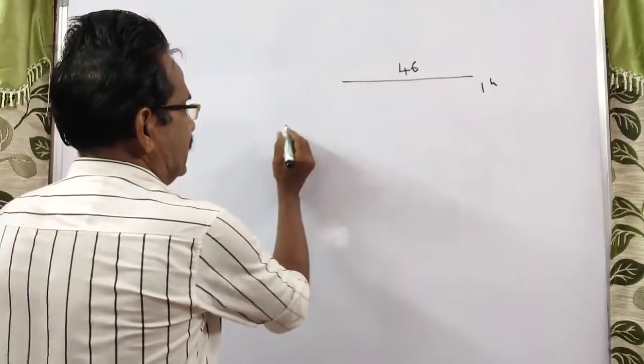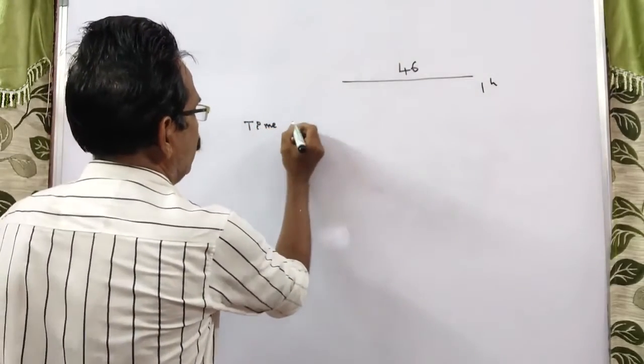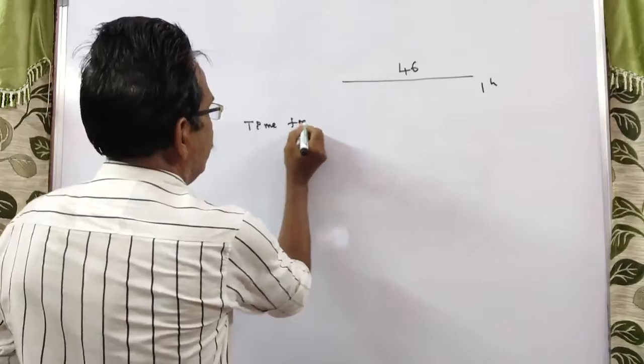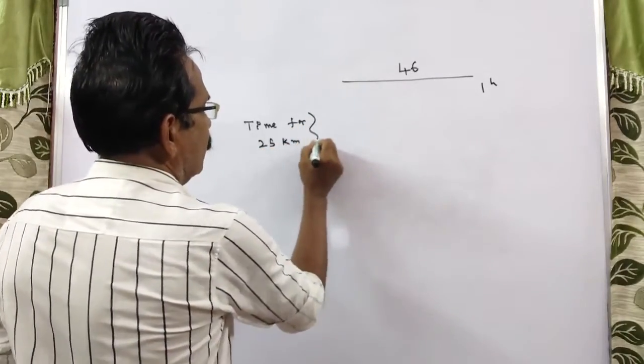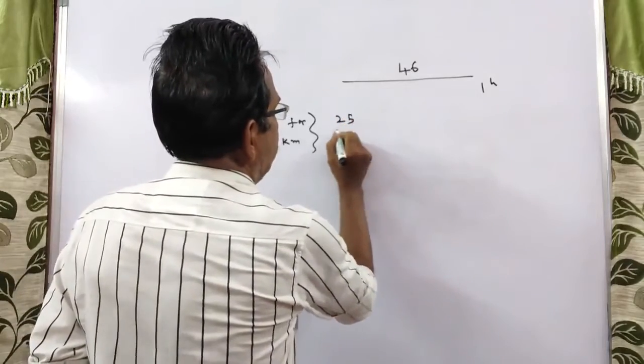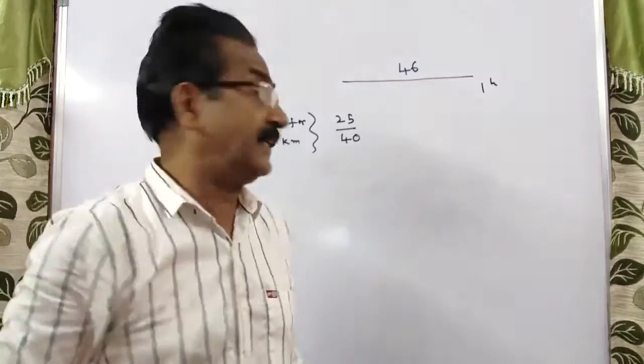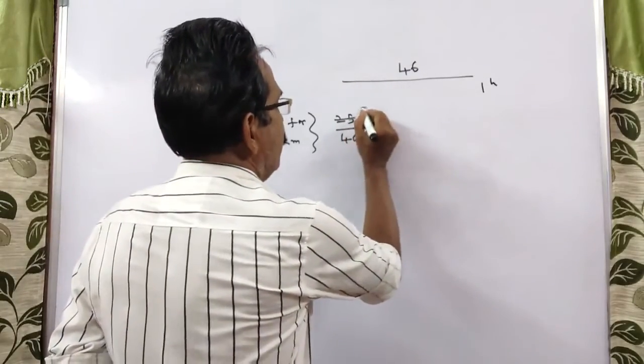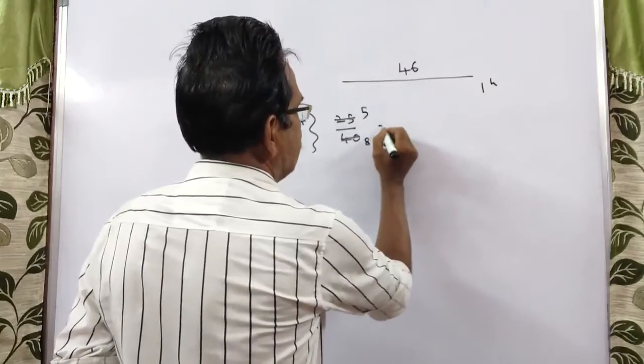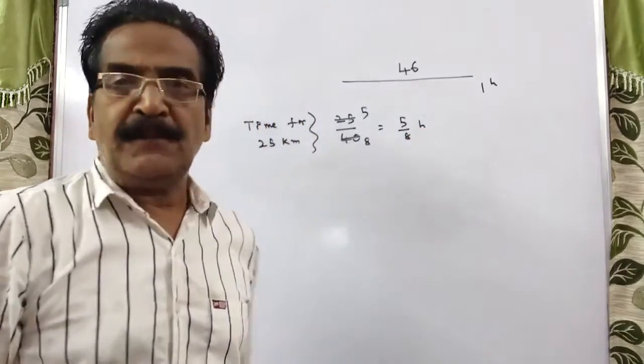The time taken for the first 25 kilometers: time is equal to distance by velocity. First 25 kilometers traveled at 40 kmph. So how much time it takes? 5 by 8 hour.